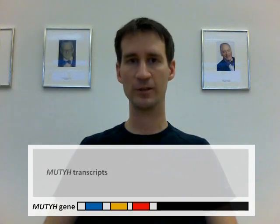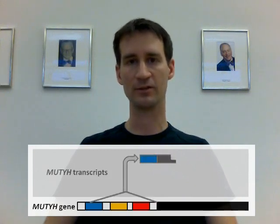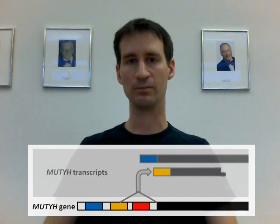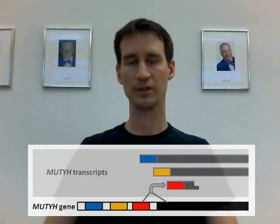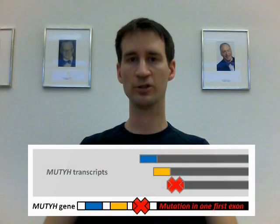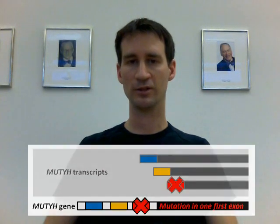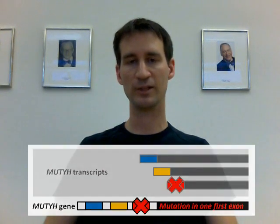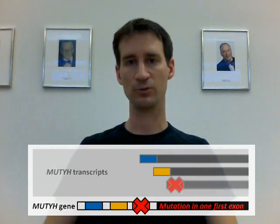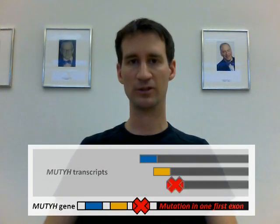For example, it contains three alternative first exons, which are shown in colors in the diagram below. So, when an alteration is located in one of the alternatively spliced areas, it may affect only one or a few transcript types.